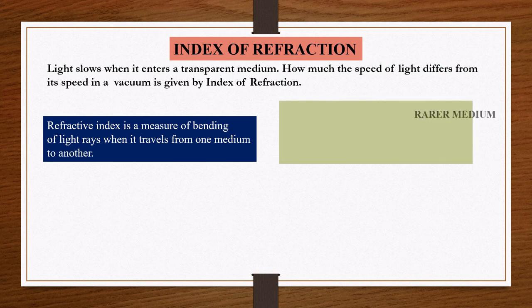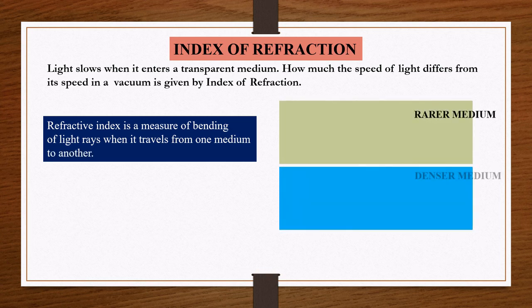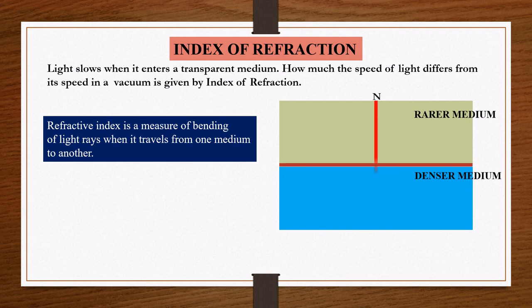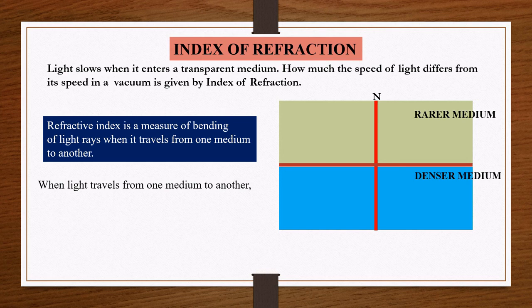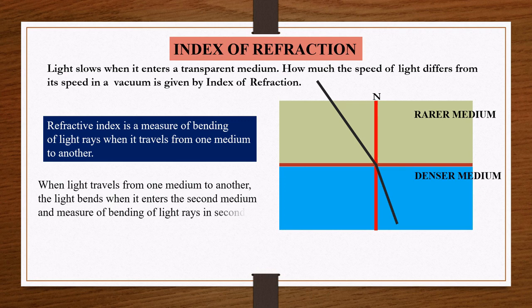Let us consider one rarer medium and one denser medium. Let this be the line which separates the two media, and let N be the normal. When light travels from one medium to another, the light bends when it enters the second medium, and the measure of bending of light rays in the second medium gives the refractive index of that medium.